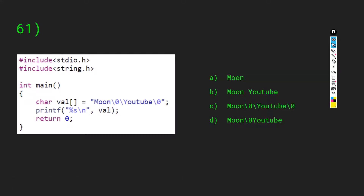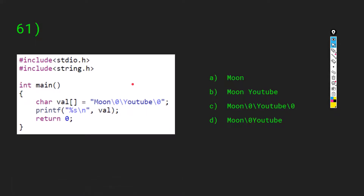Let's start with question number 61. Thank you for keeping up so long and coming to the fourth part of C MCQs. In the main function we have an array of type char: moon backslash 0, qt backslash 0.